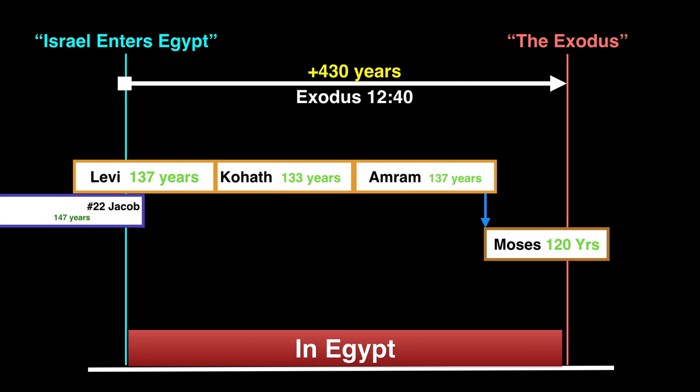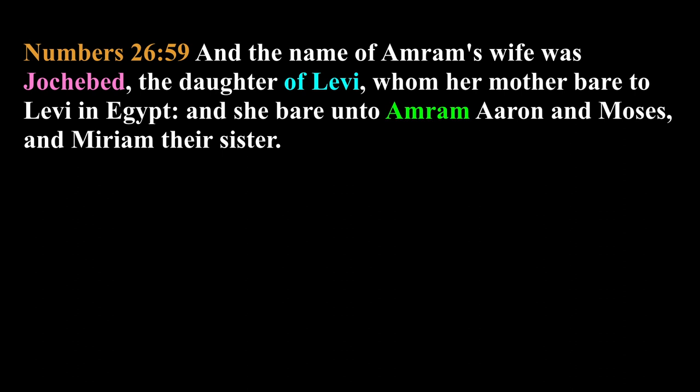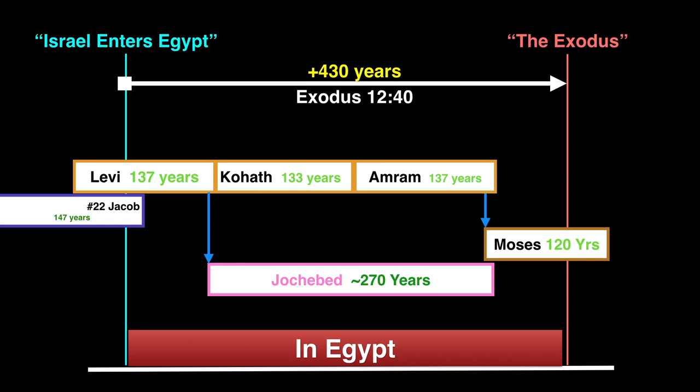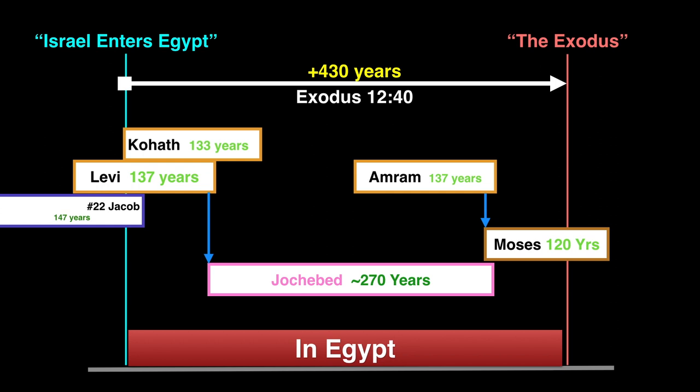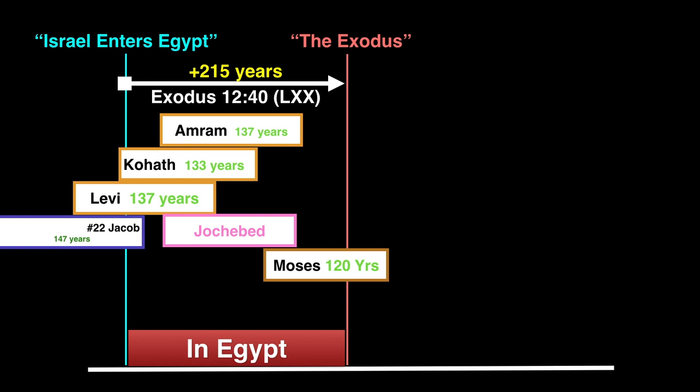The shorter proponents will quickly reply to this with Numbers 26:59 that says, And the name of Amram's wife was Jochebed, the daughter of Levi, whom her mother bared to Levi in Egypt, and she bared unto Amram, Aaron, and Moses, and Miriam, their sister. So, the reply is, Jochebed would need to be nearly 270 years old to give birth to Moses. See how fun this merry-go-round is? So, what the shorter proponent is saying is if we go back to Coath being born before entering Egypt, then shorten our chronology to 215 years with a list of parents, then it looks completely more coherent with Jochebed and Amram being Moses' father.